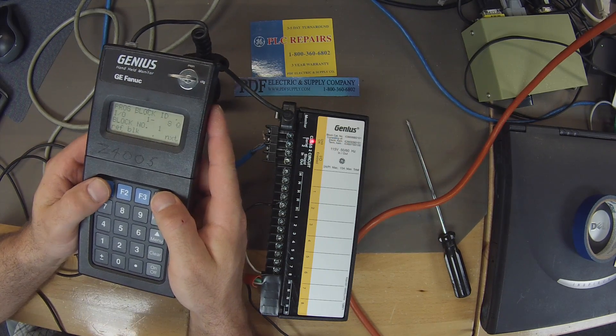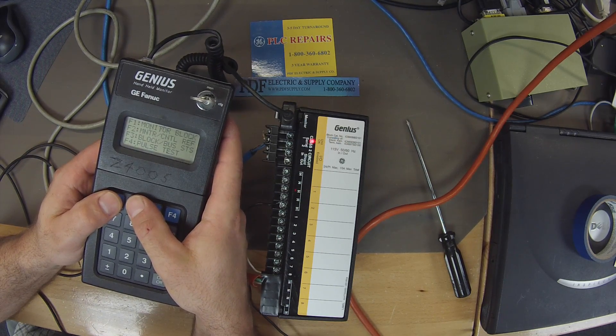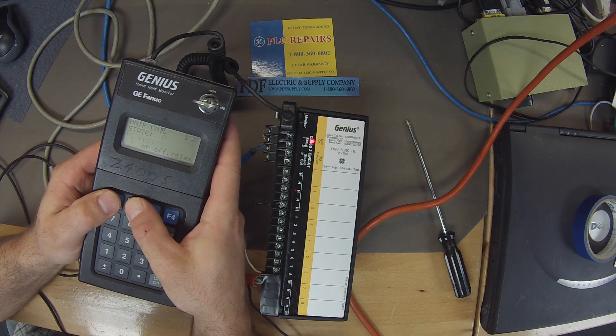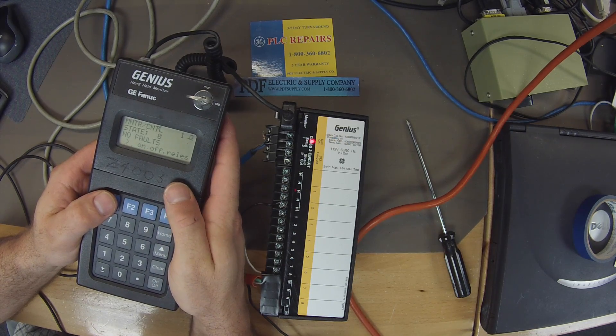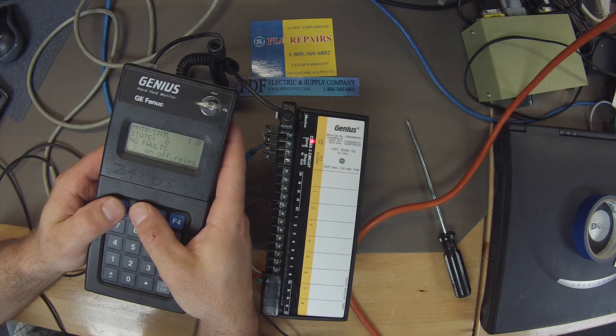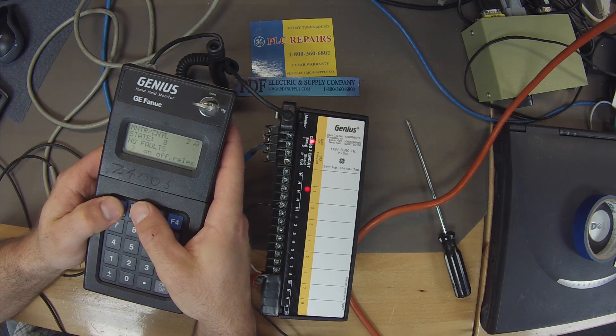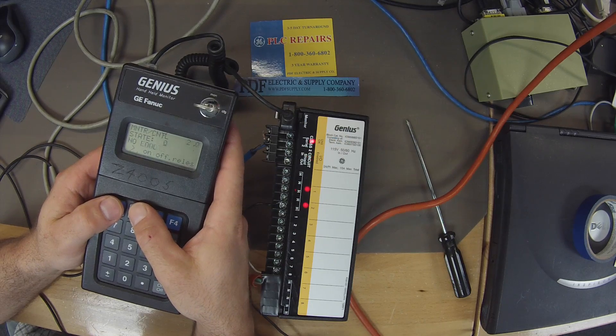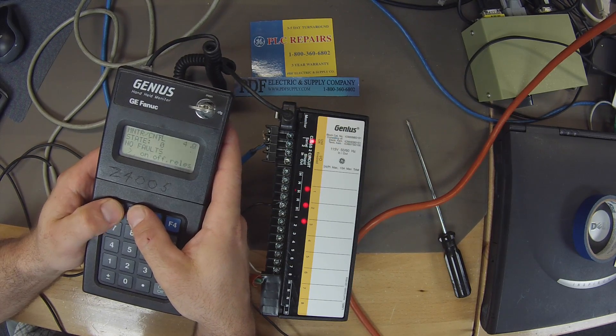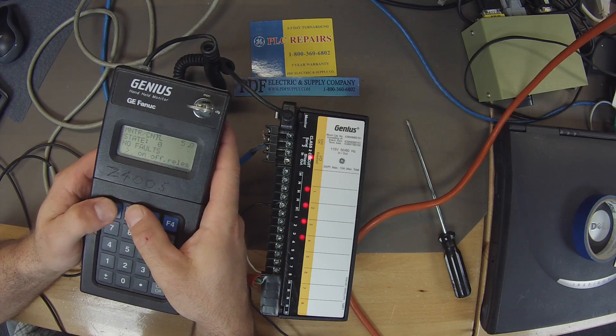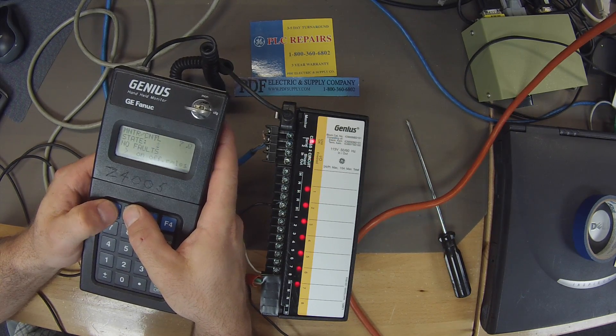Great, so the next thing is we're going to go back to home, F2 for analyze, F2 for monitor and control, and we're going to start to toggle all of these outputs on by selecting F2 for on, and then F1 to arrow to the next output, output number two on, output number three on, F1 for the next one, F2 for on, output five, seven, and eight.